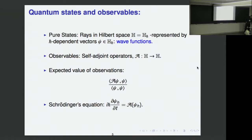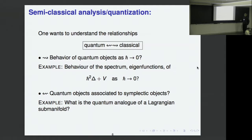Semi-classical analysis, which I think is a very beautiful subject, is in a way the opposite arrow of quantization. One wants to understand the relationships between quantum and classical mechanics. From quantum to classical is really the semi-classical limit: one takes limits of quantum objects as H-bar tends to zero. For example, from spectral theory, if you have a Schrödinger operator you would like to know the behavior of the spectrum or eigenfunctions as H tends to zero.